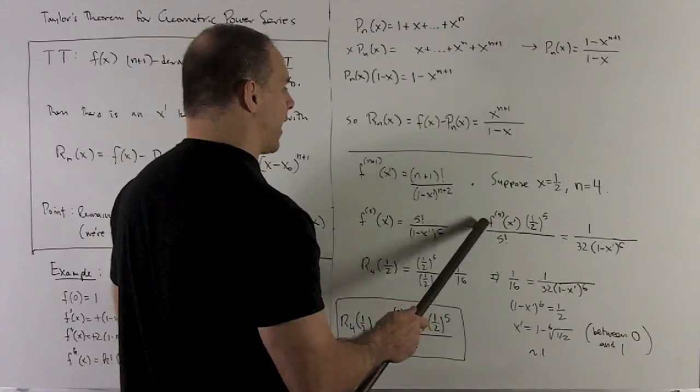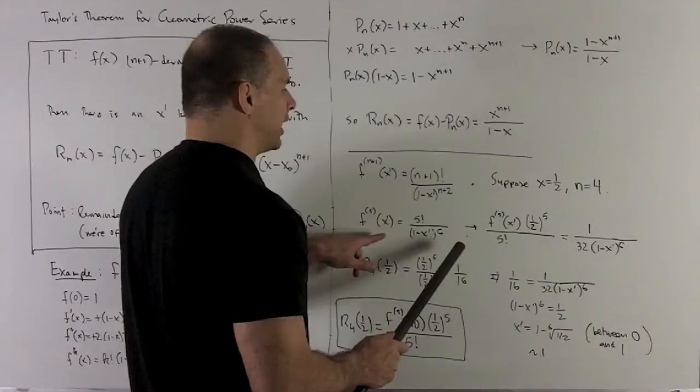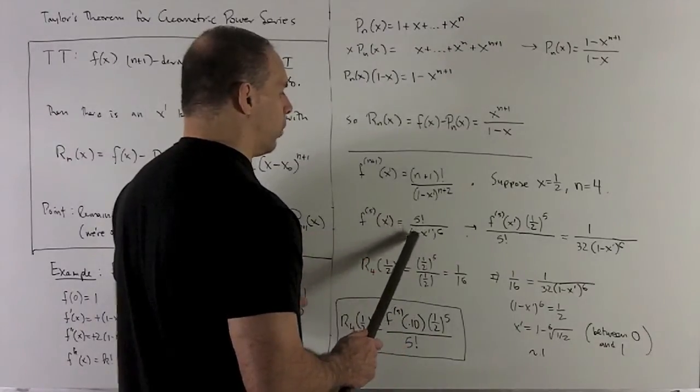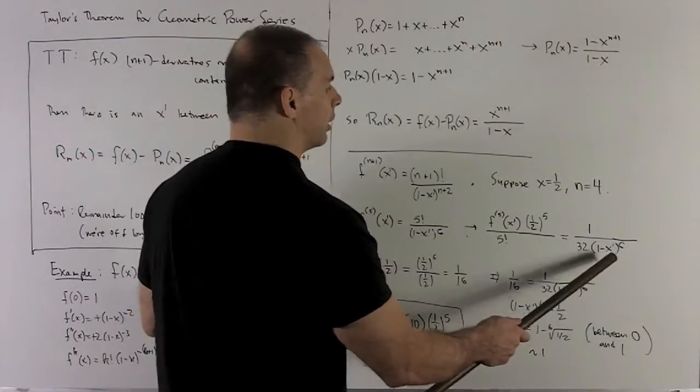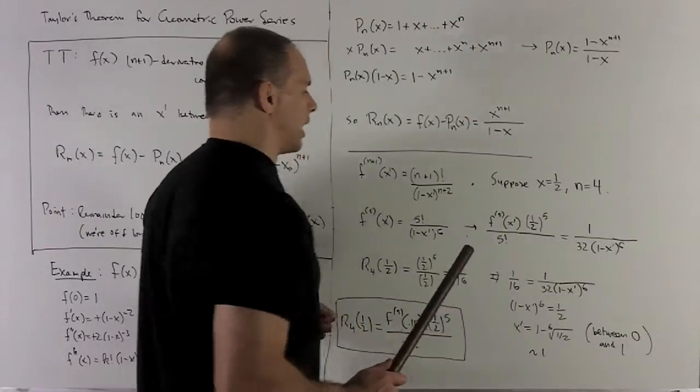So if you notice, if I take our fifth derivative of f at x prime, put it in here, the 5 factorials are going to cancel, and then I'll wind up with 1 minus x prime to the sixth in the denominator. 1 half to the fifth is 1 over 32, so I can put the 32 in the denominator also.